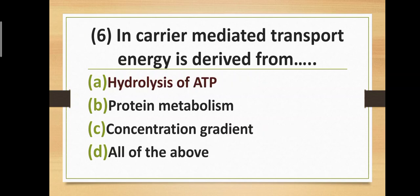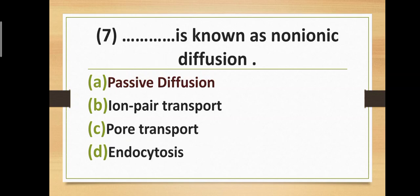Question number six: In carrier-mediated transport, the energy is derived from — Option A: hydrolysis of ATP. Option B: protein metabolism. Option C: concentration gradient. Option D: all of the above. The correct answer is option A — hydrolysis of ATP. In carrier-mediated transport, energy is derived from hydrolysis of ATP.